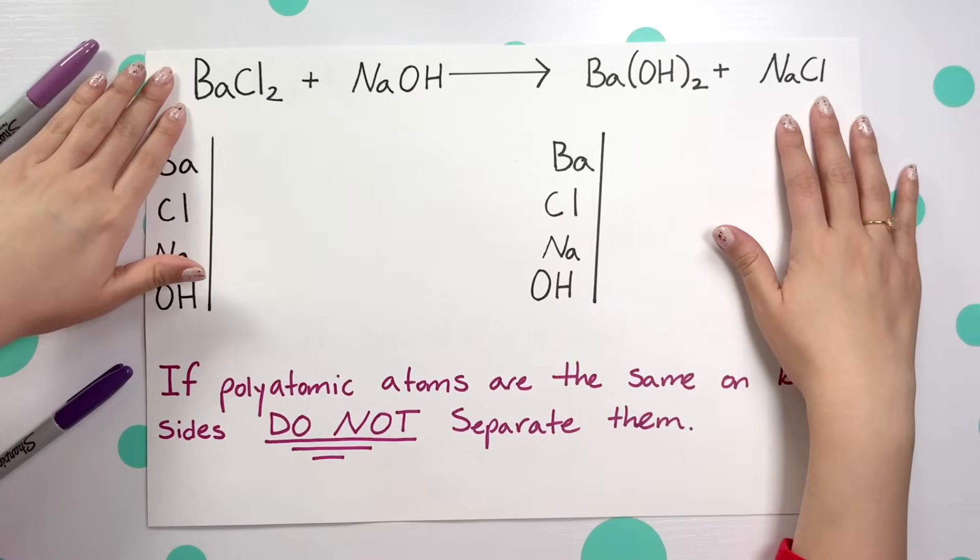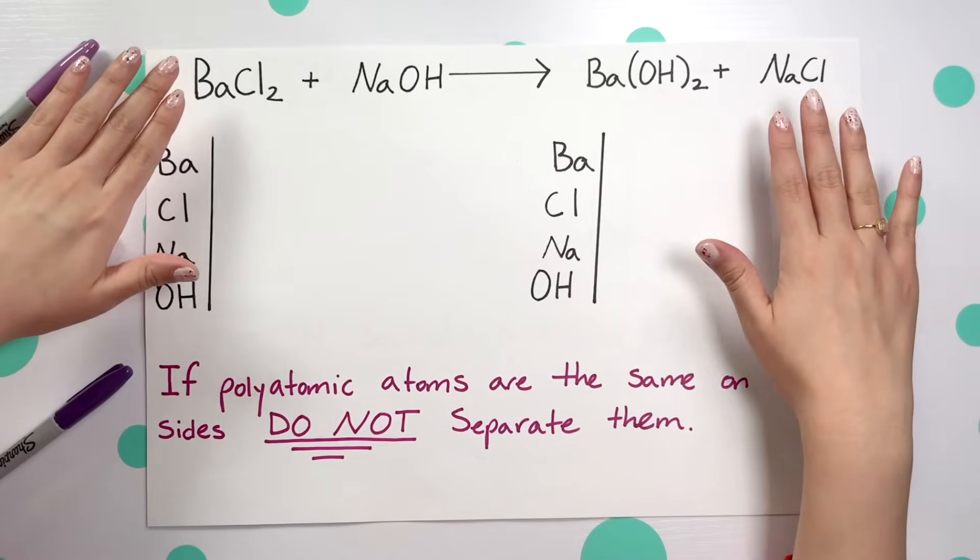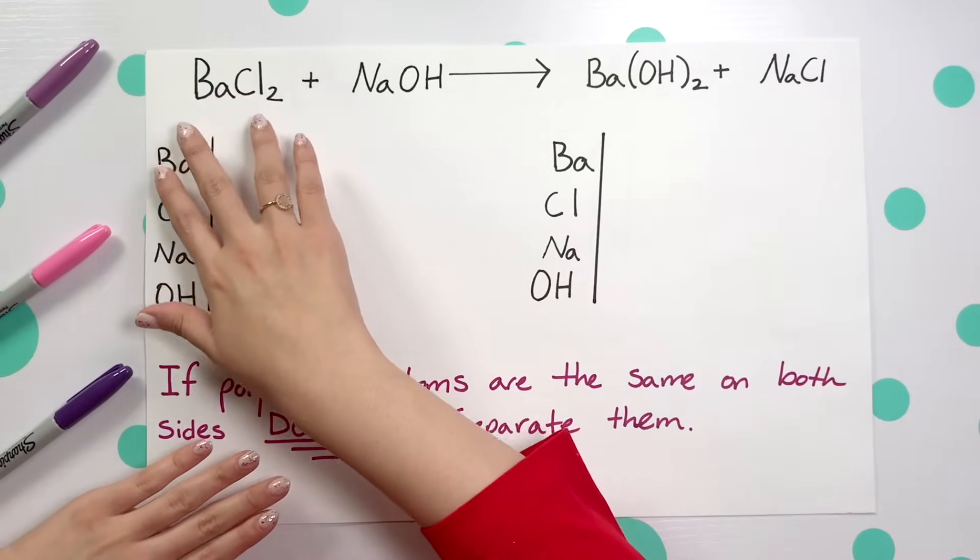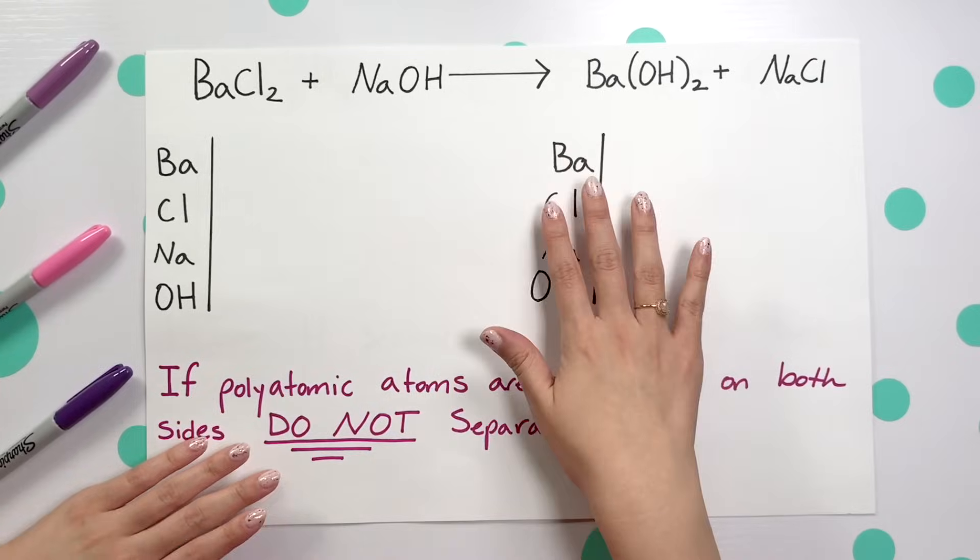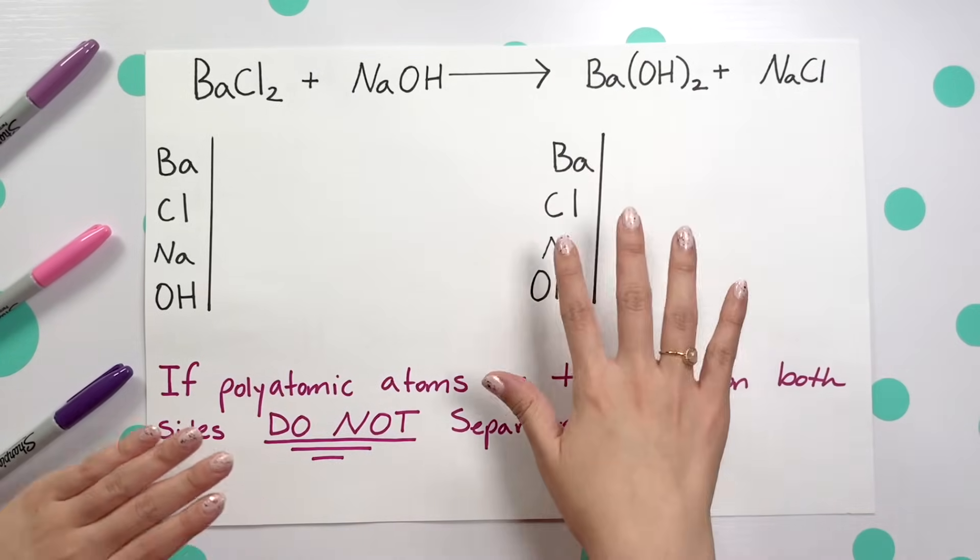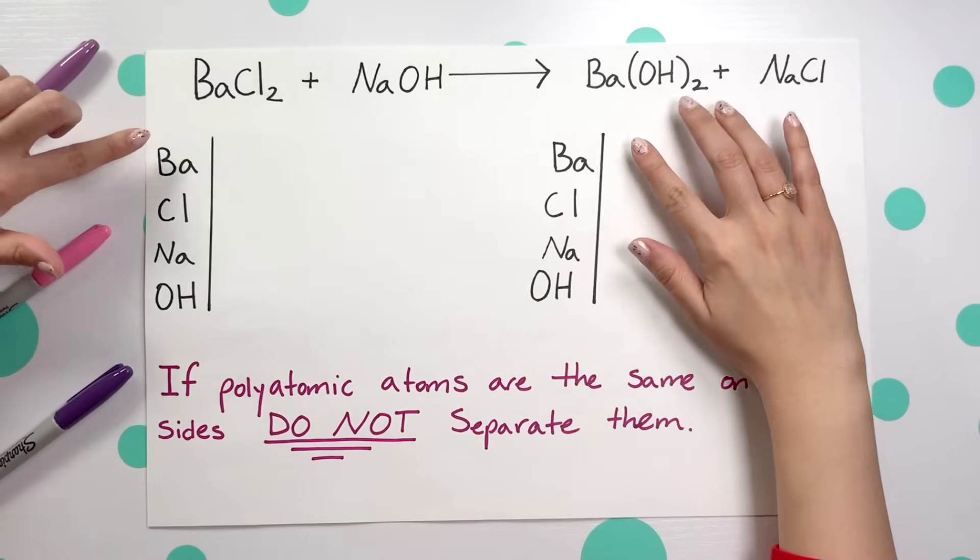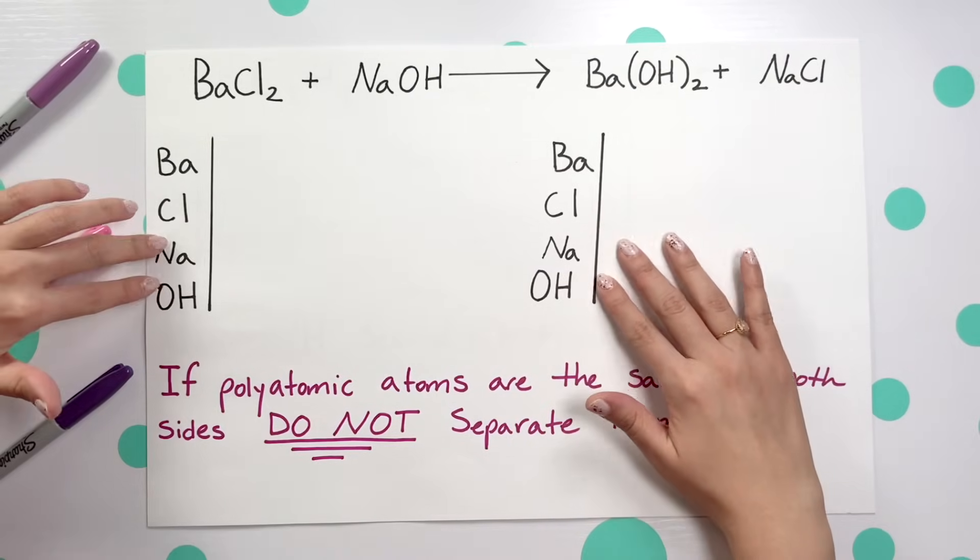Here we have an unbalanced equation. Our first step is to write all of our elements for our reactants and all the elements that we have for our products on either side, and I'm going to keep them in the exact same order to make it easier to balance.